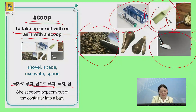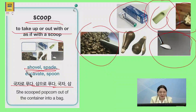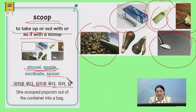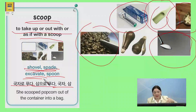Scoop이랑 비슷한 말은 shovel, spade. These are 국자, 삽. Shovel and spade are 삽. Spoon would be 국자 or 숟가락. And excavate is 파는 거예요 — it's taking something out of something else.